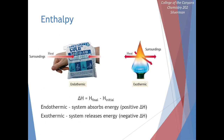This change in enthalpy can either be a positive value for endothermic processes — for example, a cold pack absorbing heat from the surroundings, causing whatever it's in contact with to get colder — or we can have exothermic processes that release heat, like burning fuel on a stove, releasing heat and allowing us to cook dinner.